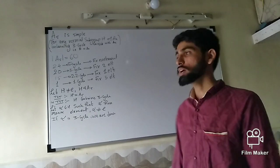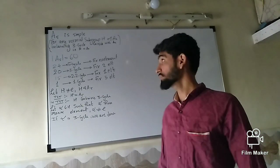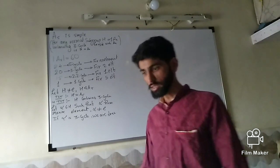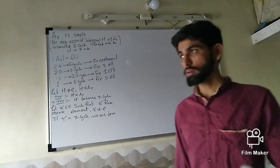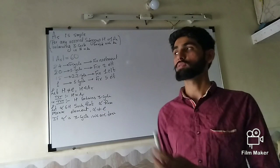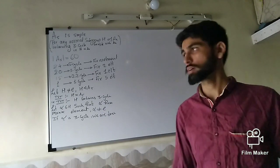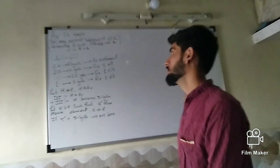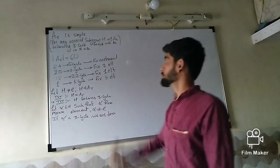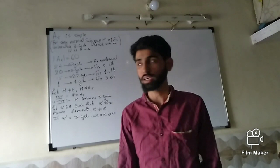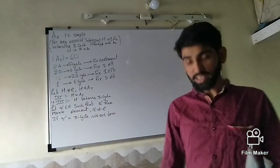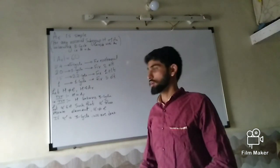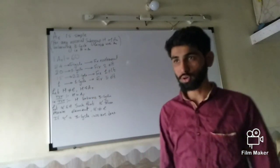In this video we are going to discuss that A5 is a simple group. This result is true for An for any n greater than or equal to 5, so we can generalize it. For proving this result we use the fact that any normal subgroup H of An which contains a 3-cycle must be equal to An. We are going to use this result without proof.